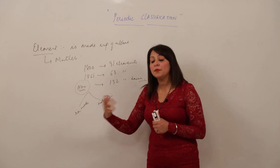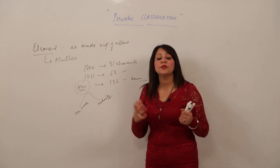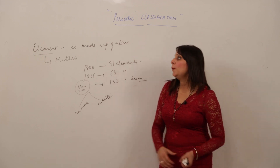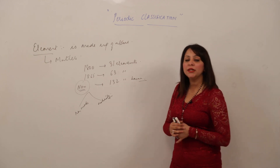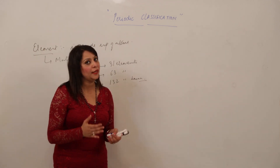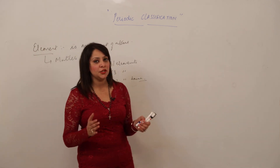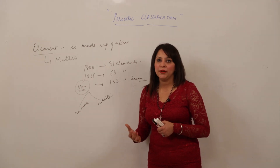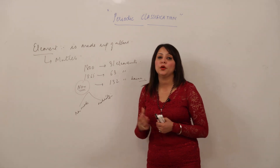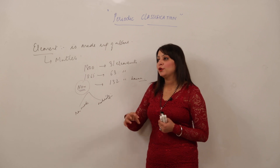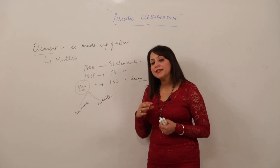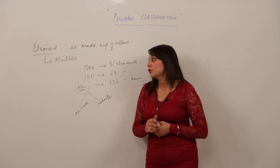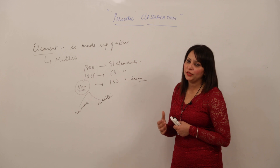Classification helps in correlating the properties of elements with some fundamental property, and we can know the relation between different elements — whether they resemble each other or are different. When we know an element belongs to a certain family, we already have an idea of that family's properties, making it easier to recall all the properties of its members.